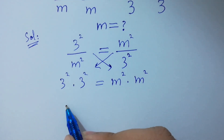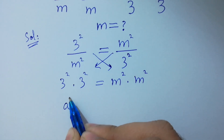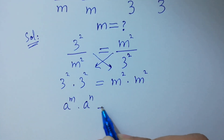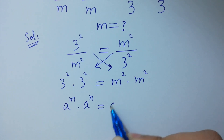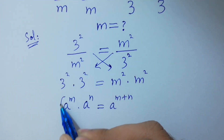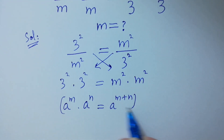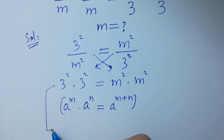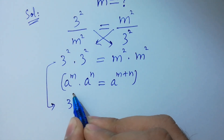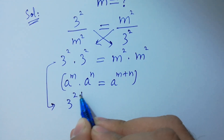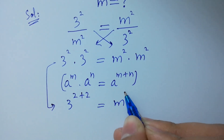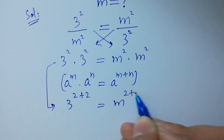Using the rule a to the power m times a to the power n equals a to the power m plus n, we get 3 to the power 2 plus 2 equal to m to the power 2 plus 2.